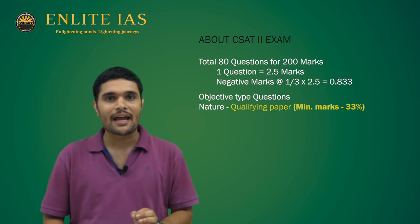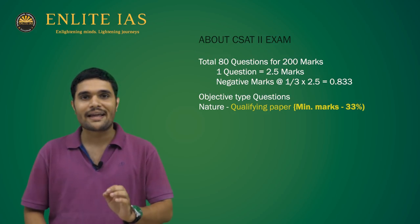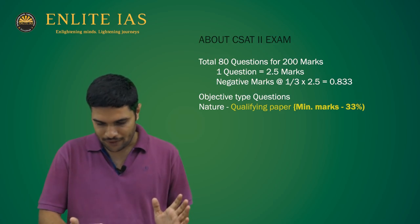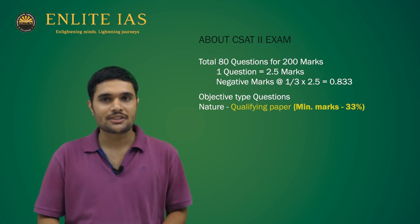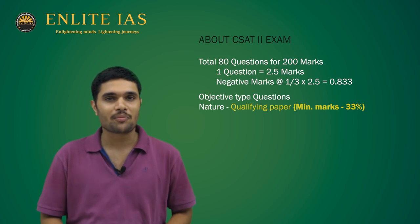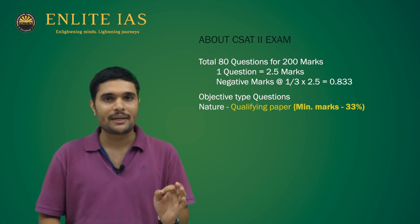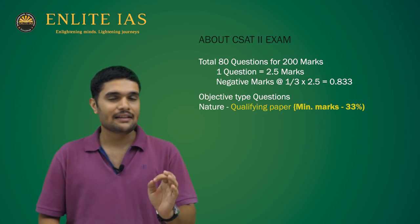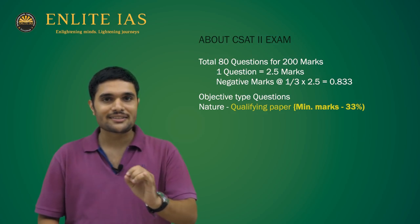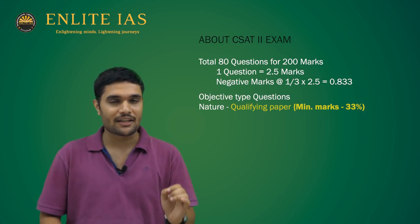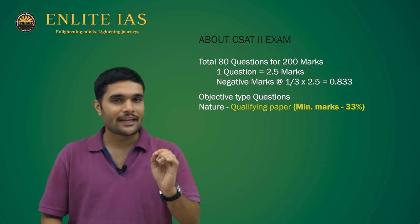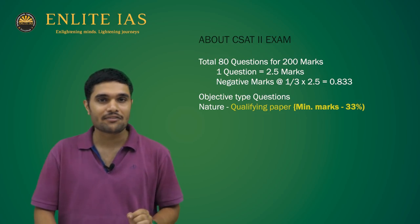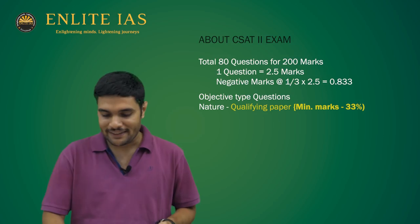That is your benchmark, but I strongly advise that you score more than 80 — that will be a safe zone so that you need not worry at all. There are 80 questions, each having 2.5 marks, total 200 marks, and you have to get a minimum of 33% to qualify. Each question also has a negative mark: if you get the answer wrong, 1/3rd of the total marks — that is 2.5 divided by 3 — which will be deducting around 0.833 marks.